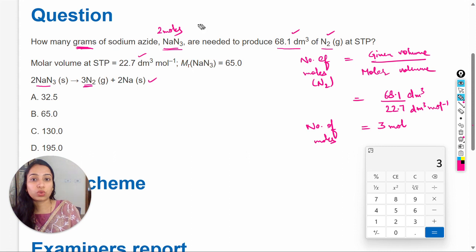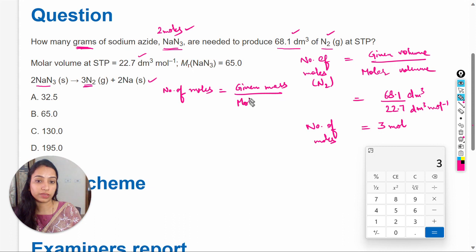We need to convert these moles into grams. The formula is: number of moles equals given mass divided by molar mass. We already know the moles is 2, and we need to calculate the given mass.